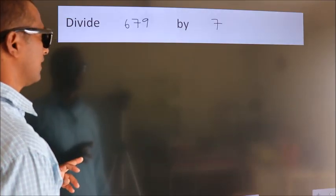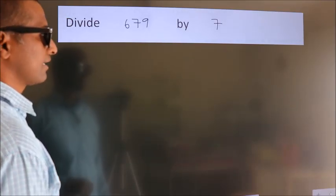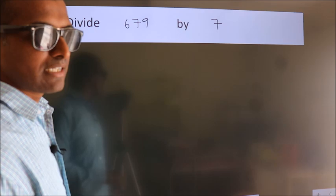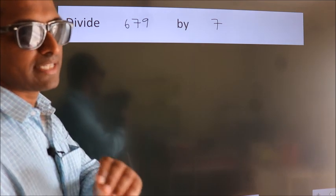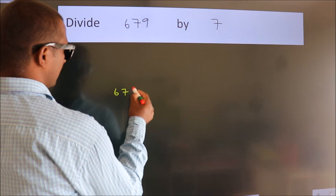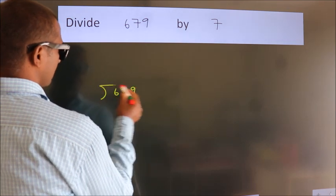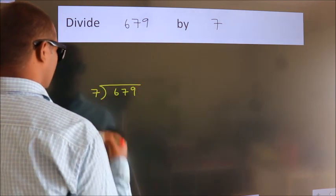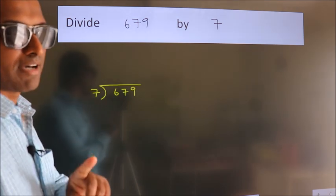Divide 679 by 7. To do this division, we should frame it in this way. 679 here, 7 here. This is your step 1.